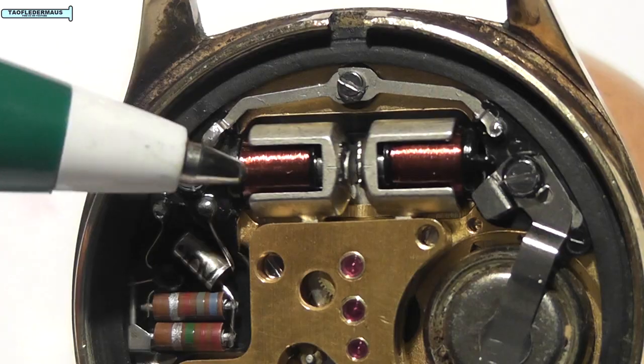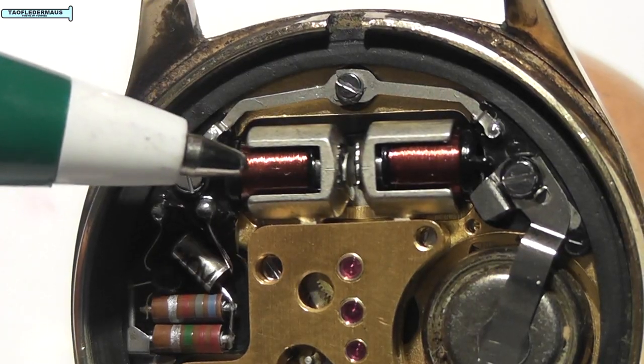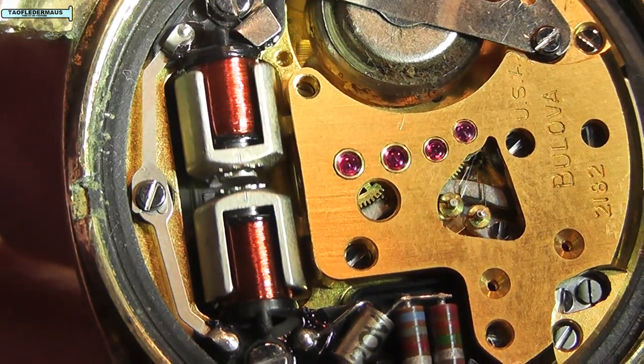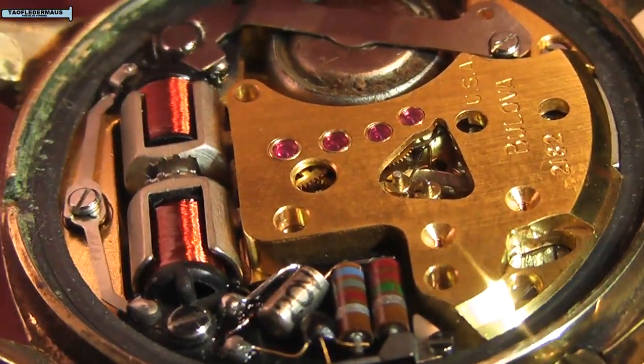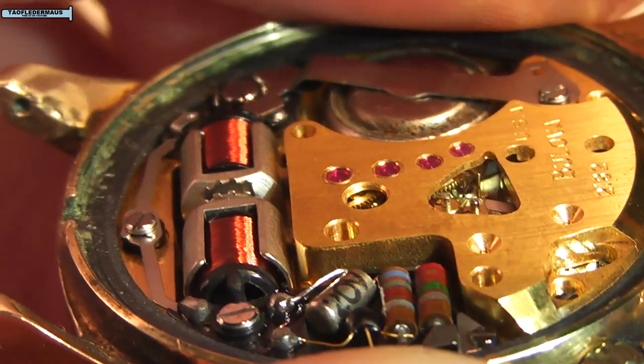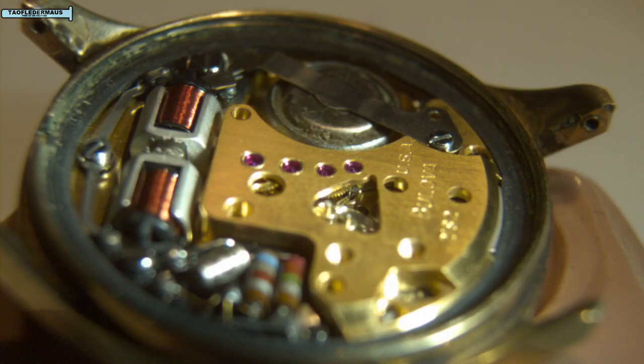Now this coil also has a feedback coil in it. And what this does is form a servo system. If you bump the watch if the temperature changes if the voltage in the battery drops it'll keep on putting out 360 Hertz.